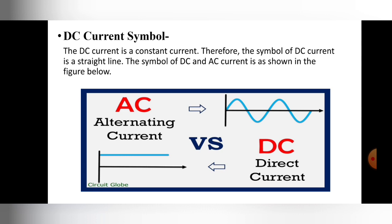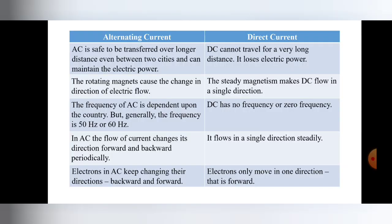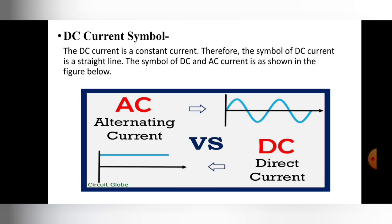Here the symbols of AC current and DC current are shown. For alternating current, the symbol on the upper side shows change in direction and change in magnitude. But direct current does not change in direction, so it is represented as a straight line. Those are the symbols of AC and DC current.